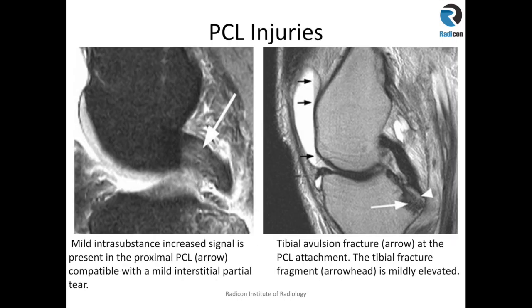A couple of examples of PCL injuries. You can see the PCL here is thickened. There are intrasubstance signal changes with surrounding soft tissue edema and reaction, and it is disrupted here distally. So it is almost a complete tear distally, with an intrasubstance or interstitial tear more proximally.